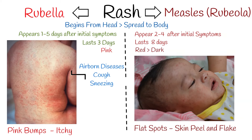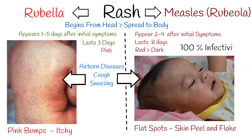Both measles and rubella are airborne diseases and spread easily from person to person through coughs and sneezes. However, measles has incredibly high infectivity and spreads very easily — measles' infectivity is almost 100%.